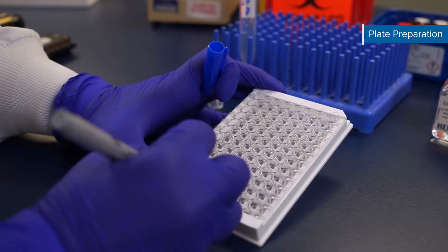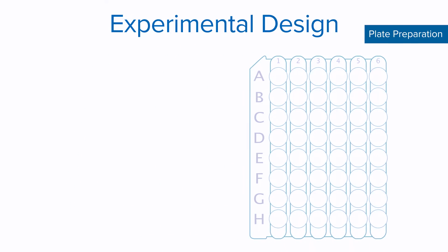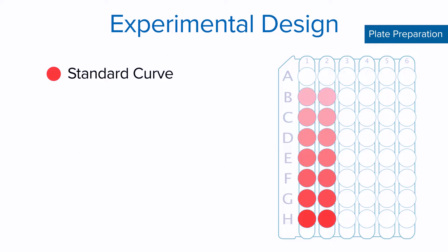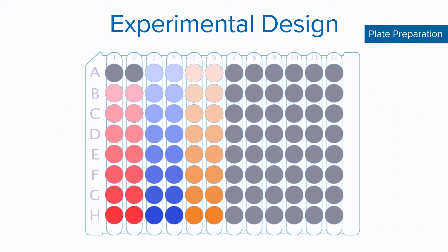Design your plate layout to determine how many wells you will need to coat for the assay plate. Our assay plate will be set up like this with the standard curve in duplicate in the first two strips, the samples in duplicate in strips 3, 4, 5, and 6, and the remaining wells as blanks.